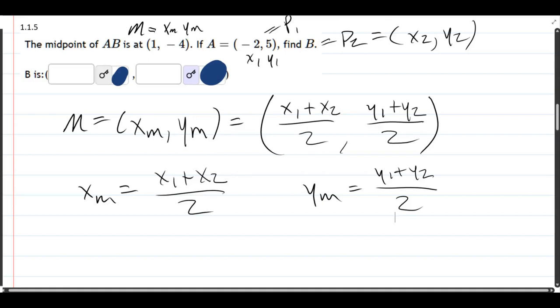All right, we're just gonna fill in all the values that we know. We know XM is one. X1 is negative two. We don't know X2. We're trying to find that. Now for the Ys, the Y midpoint's negative four. The Y1 is positive five. We don't know Y2. We need to find X2 and Y2.